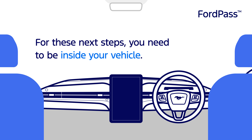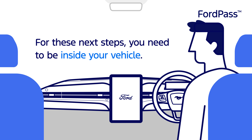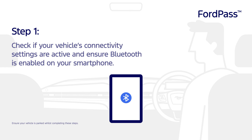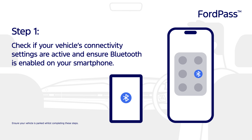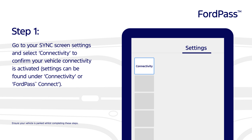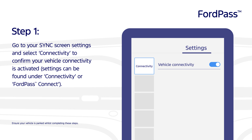For these next steps, you'll need to be inside your vehicle. Step 1: Check if your vehicle's connectivity settings are active and ensure Bluetooth is enabled on your smartphone. Go to your Sync screen settings and select Connectivity to confirm your vehicle connectivity is activated. Settings can be found under Connectivity or FordPass Connect.